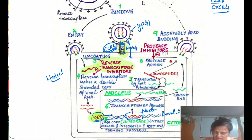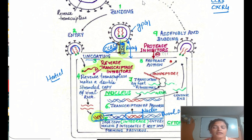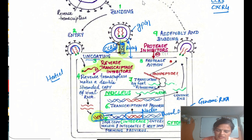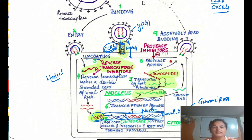Once integrated, the proviral DNA remains integrated lifelong. This proviral DNA then forms genomic RNA and messenger RNA. The messenger RNA undergoes translation, producing various polypeptides — a bigger chain protein is formed.